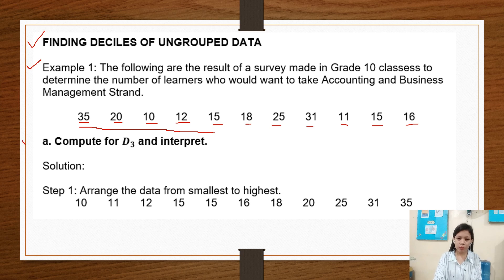Find or compute for D sub 3 and interpret. Solution: Step 1, arrange the data from smallest to highest. So we arrange the data: 10, 11, 12, 15, 15, 16, 18, 20, 25, 31, and 35. There are 11 data values.